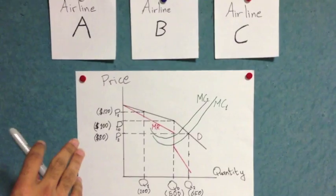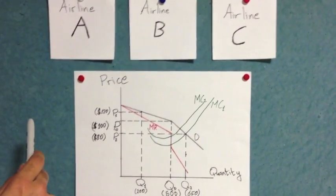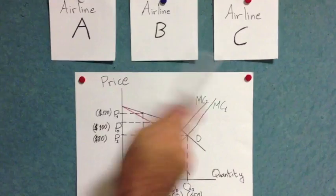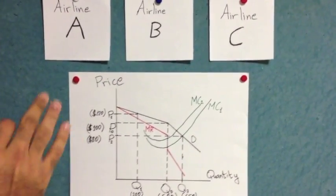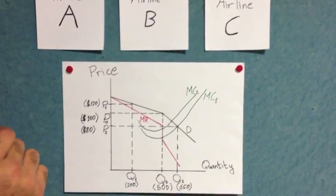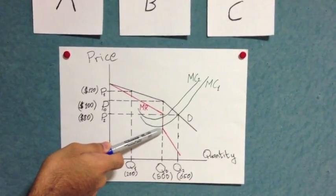What is unusual is this gap in the marginal revenue curve. Simply put, if the firm lowers its price below the initial price of $100, a strong reaction from the competitors will occur. This will be in the form of an industry-wide price drop. This will cause the marginal revenue to drop dramatically, causing a gap in the curve.